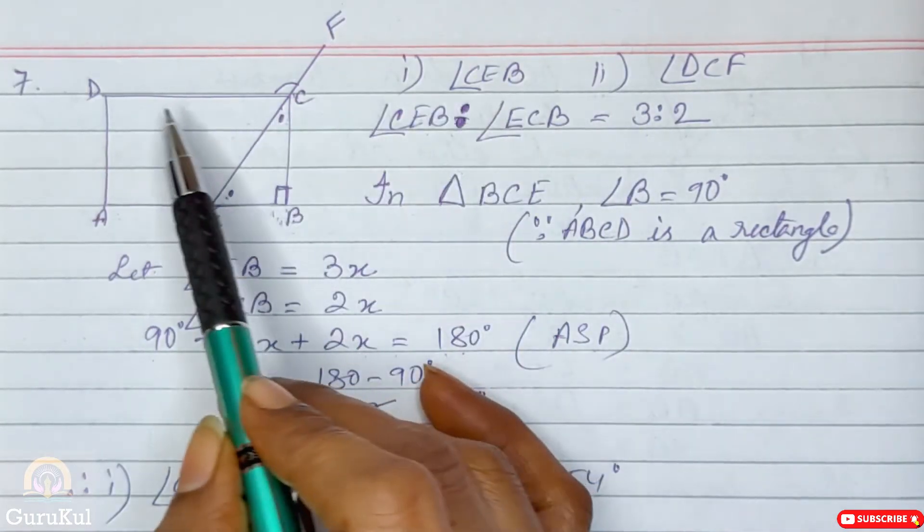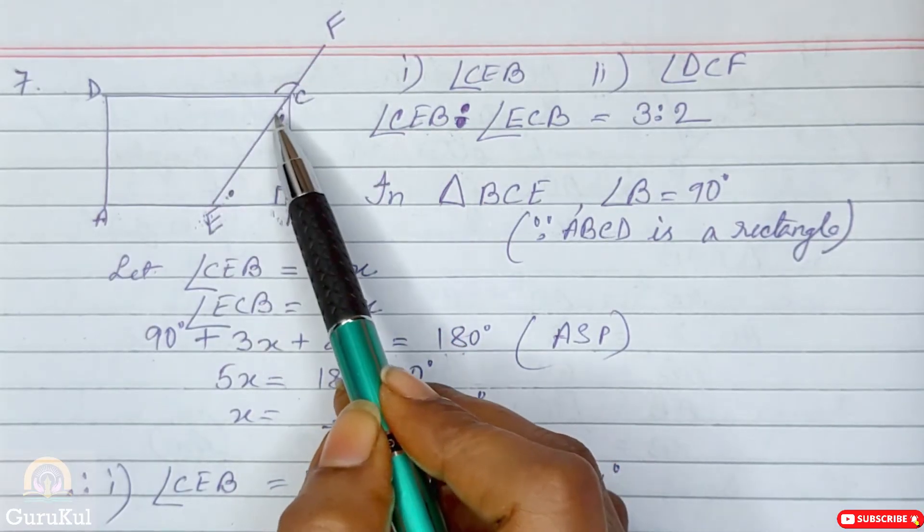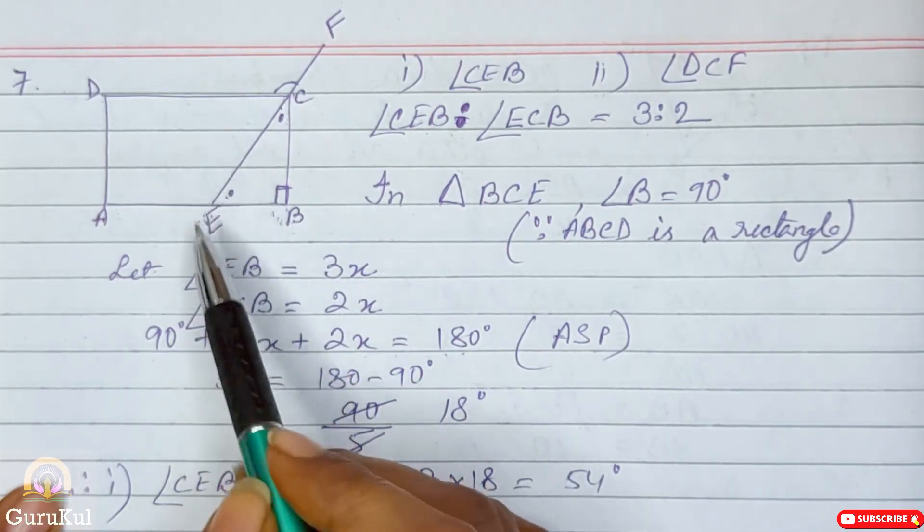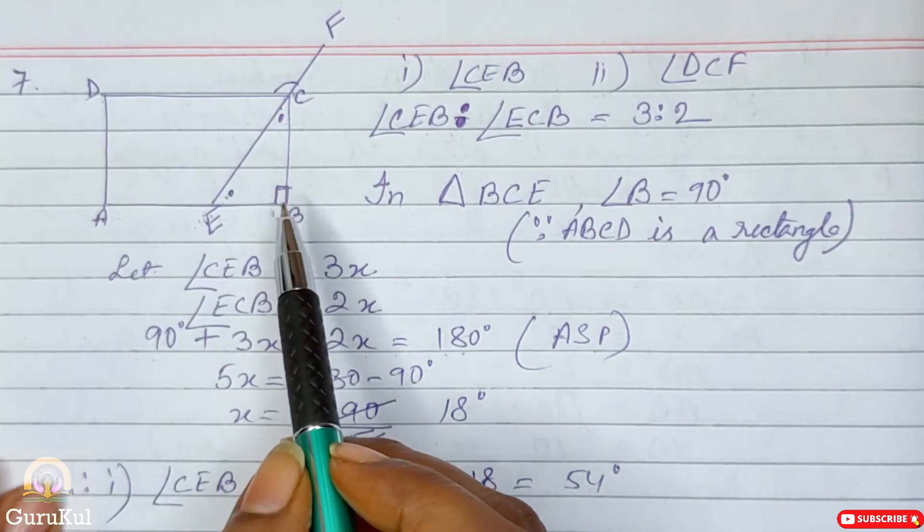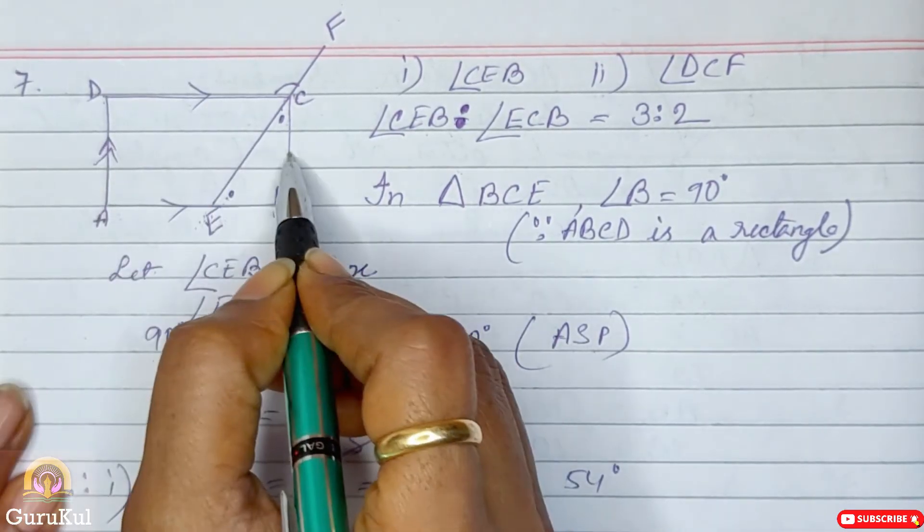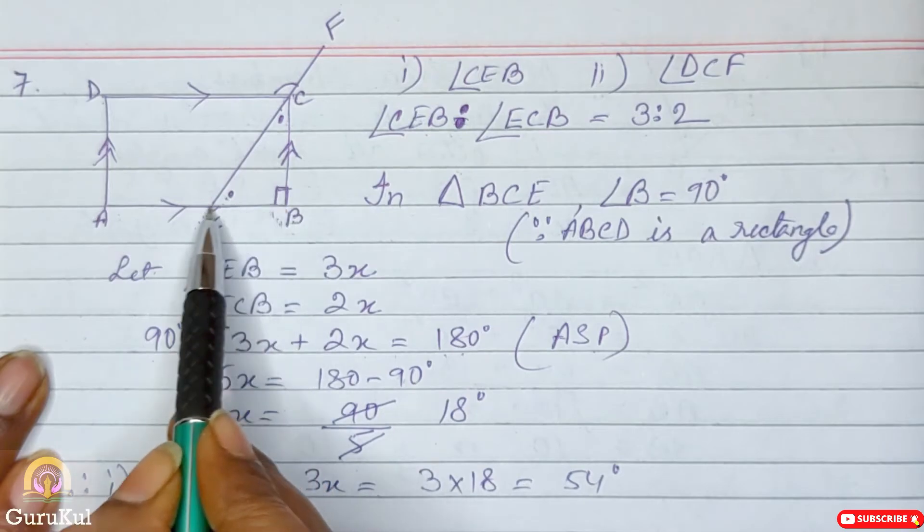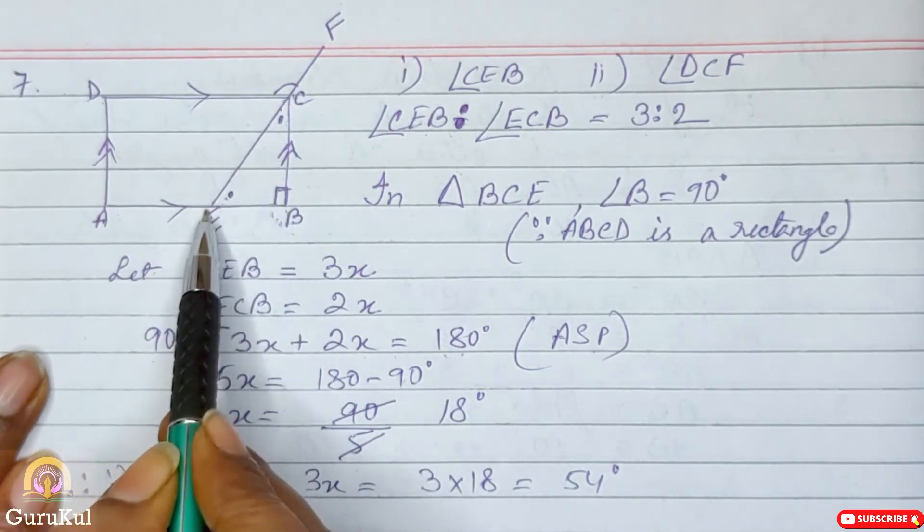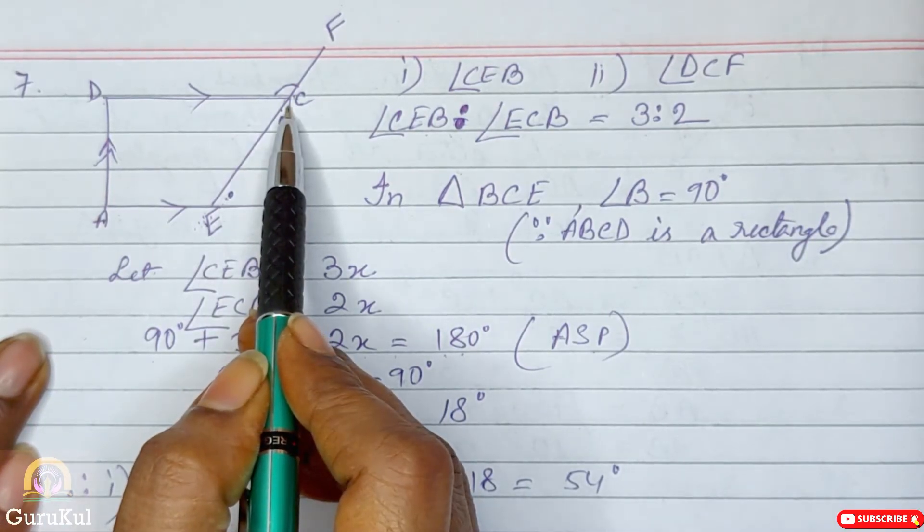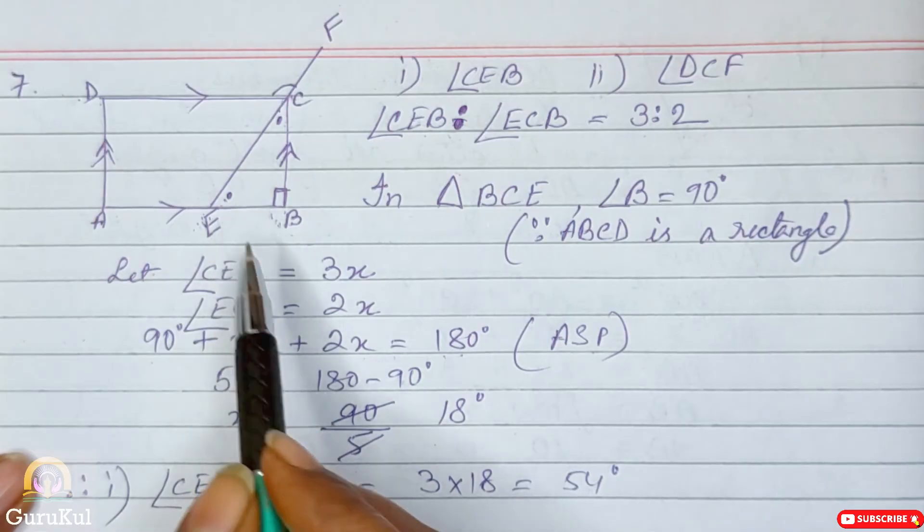Now the second part is we need to find the measurement of angle DCF, the angle which is outside the rectangle. Now according to the property of a rectangle, opposite sides are equal as well as parallel. That means, this is parallel with this and this line is parallel with this. Now here, this is a transversal line. Now this is forming a Z form, right?